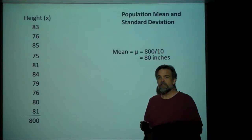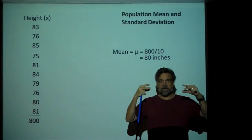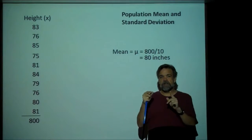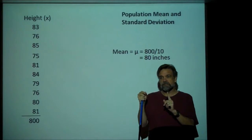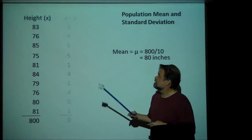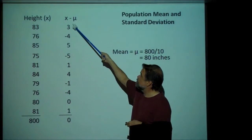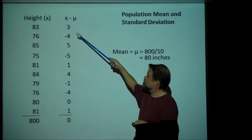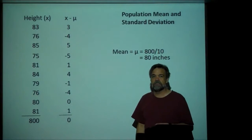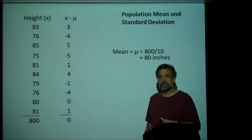Now, what I want to do is calculate the standard deviation. The standard deviation is a measurement of spread — it measures how spread out your data are. If you think about it, it's more spread out if the difference between all the data points and the mean is greater. One thing I could do is take the distance between each data point and mu and add those up, but the problem is that some are positive and some are negative, and the sum is always zero.